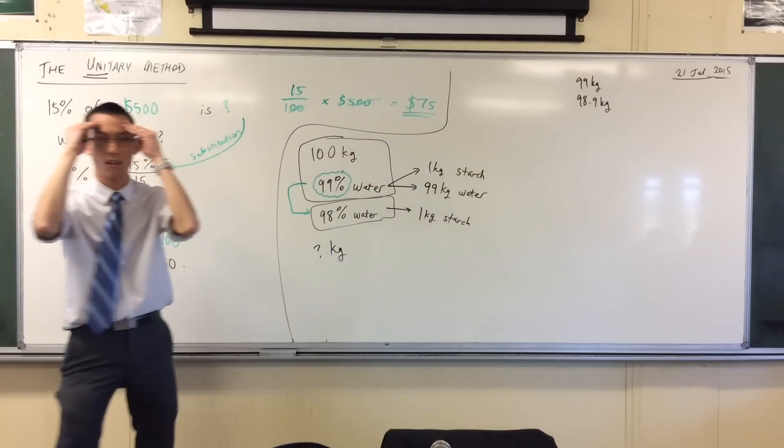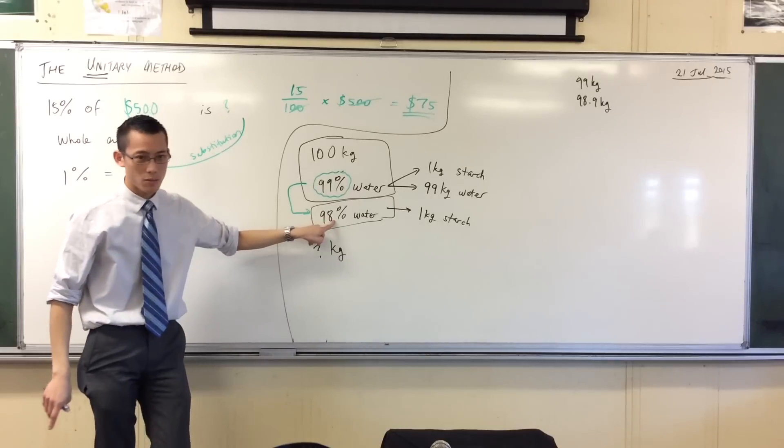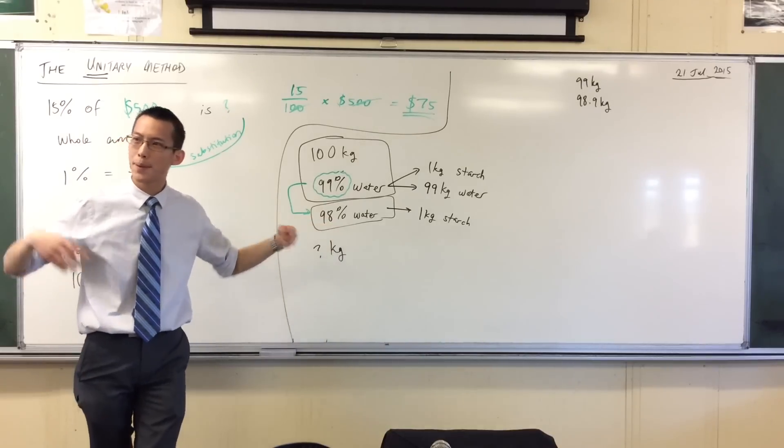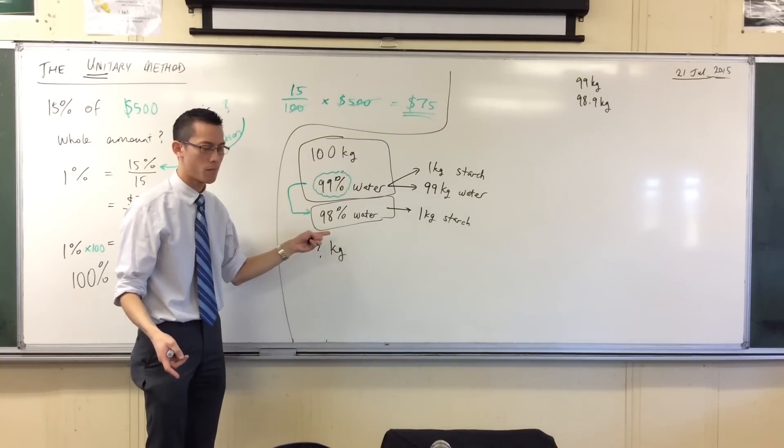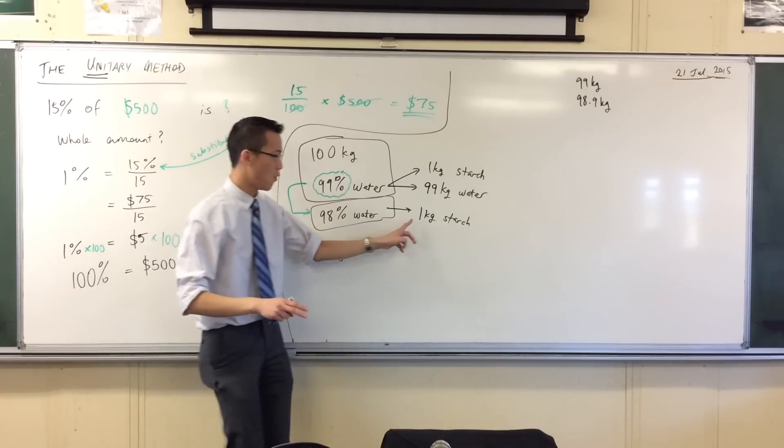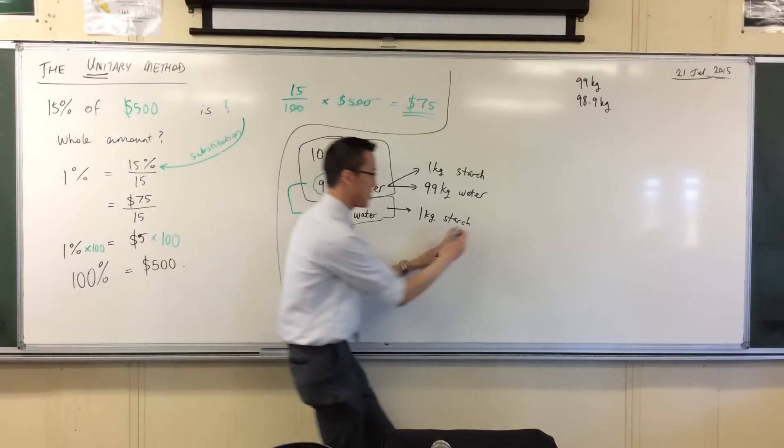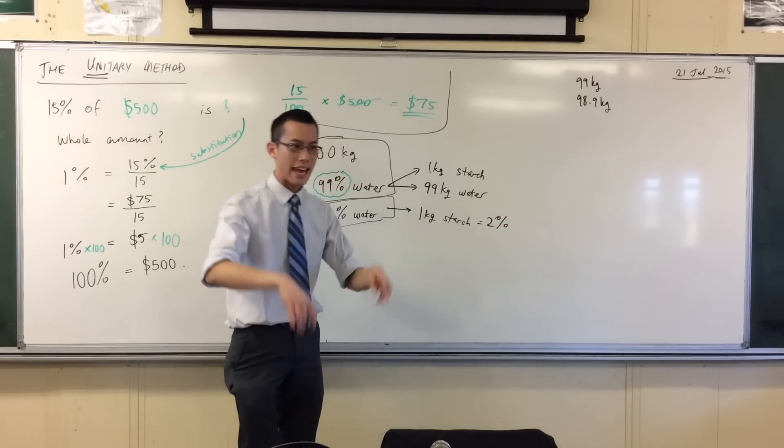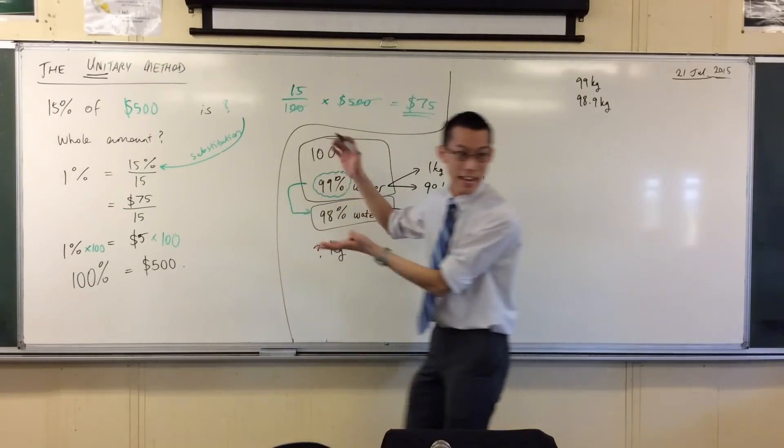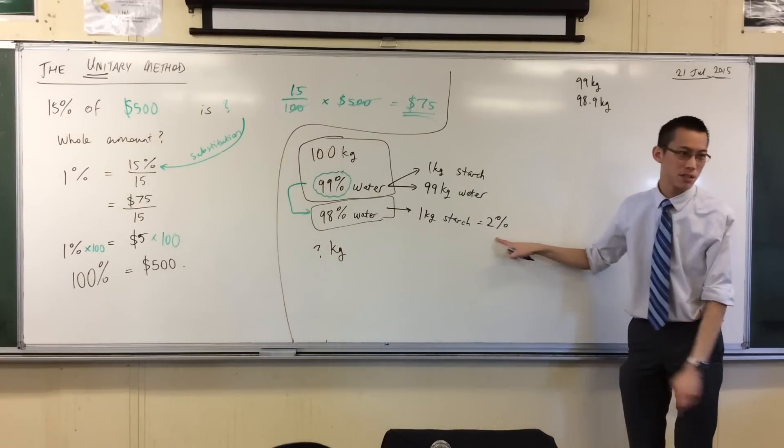Now hold on a second, hold on, hold on. 98% is water. So what percentage is not water? Two. Two percent, right? One kilo starch, that's two percent, right? Okay, now the unitary method is really handy because that's two percent.